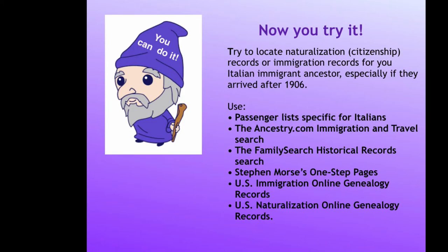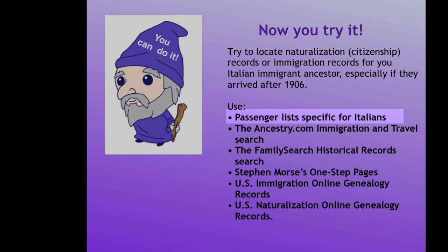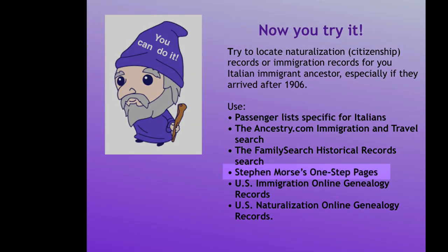Now you try it. Try to locate citizenship records and passenger lists for your Italian immigrant ancestor, especially if they arrived after 1906. First, from the Italy Origins article, try the passenger lists specific to Italians. Next, use the shortcuts that will search many databases all at once. Then go to Stephen Morris' One Step pages and try searching the specific time period and specific port. Finally, use the two Online Genealogy Records pages to look for databases not included in the other searches.